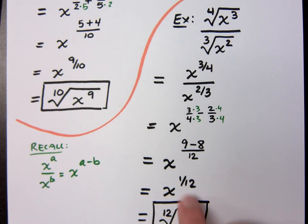And notice I don't have, where did the one go? It's understood. Right, this is X to the first. It's understood to be there, so I don't need to write that.